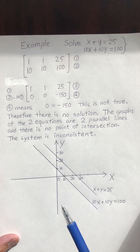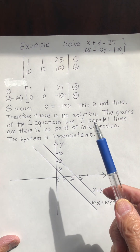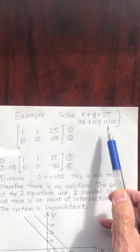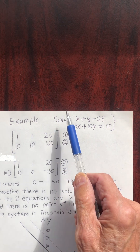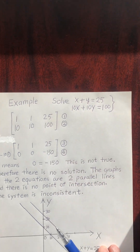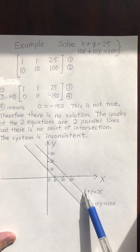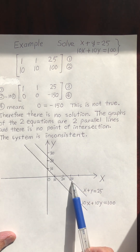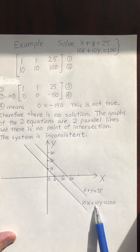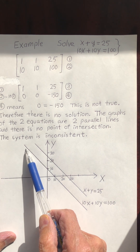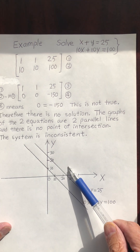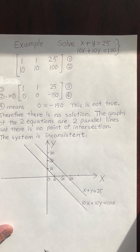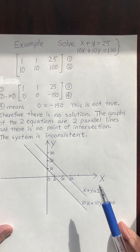That means I don't have any answer — no solution. Graphically, this means these two lines do not have a point of intersection. Looking at the graph: x plus y equals 5 is one line, and 10x plus 10y equals 100 is another line. You will see that these two lines are parallel lines. If you have two parallel lines, they do not intersect, so there is no solution.